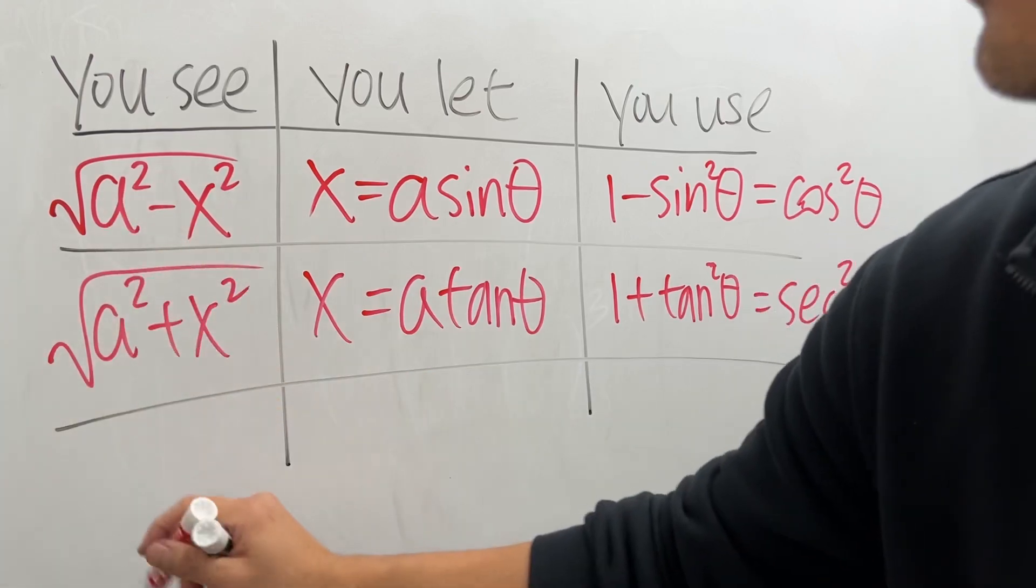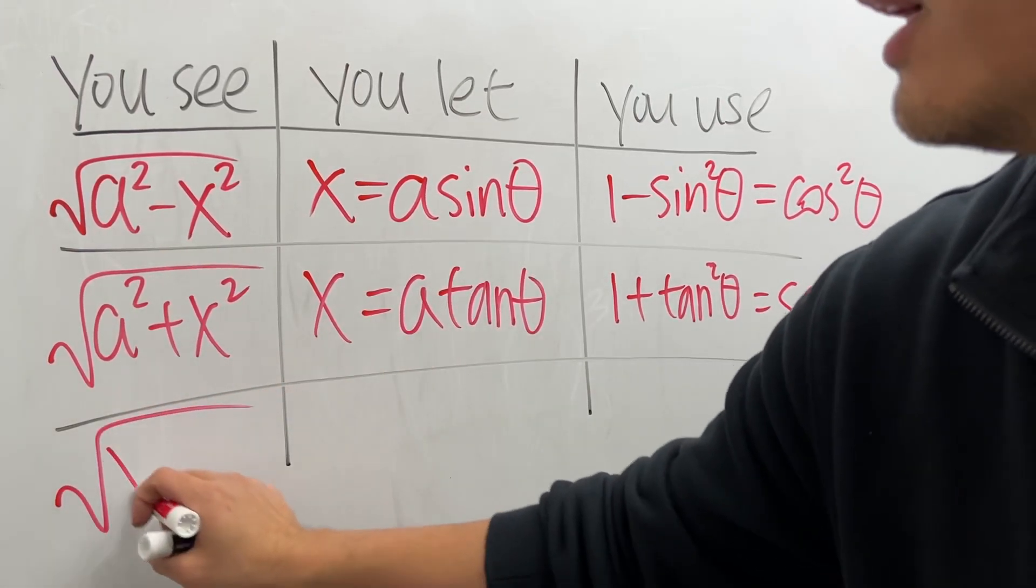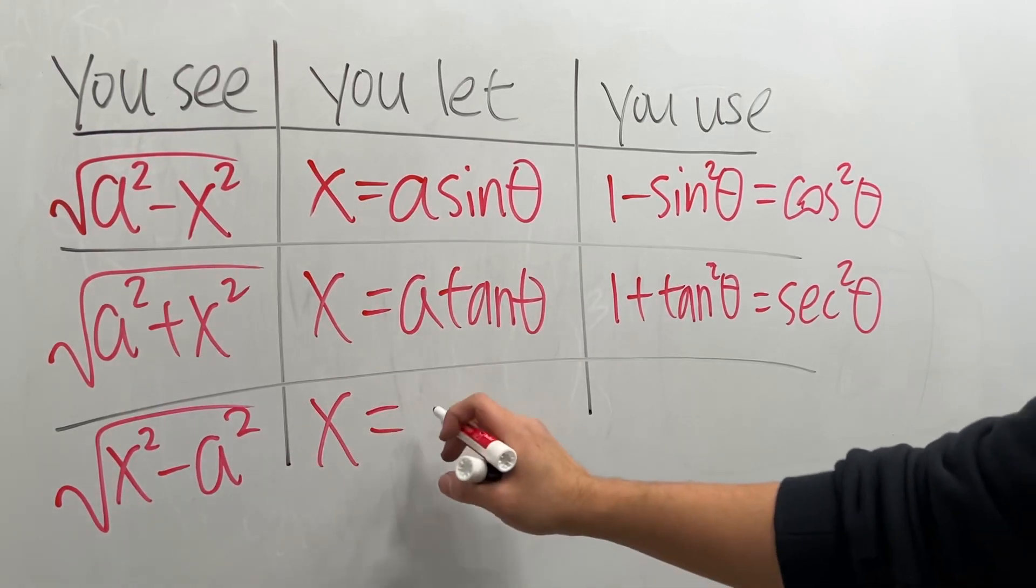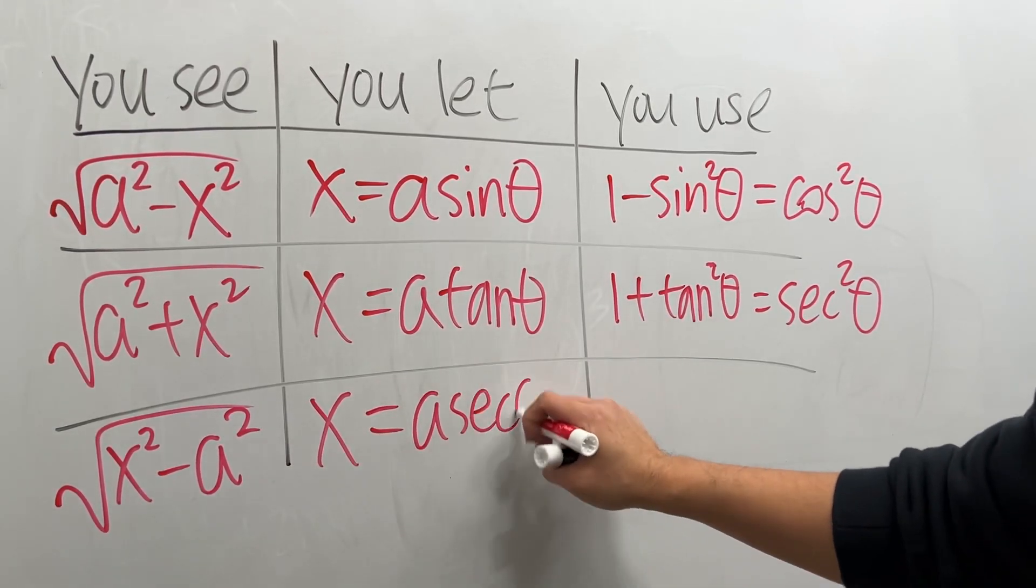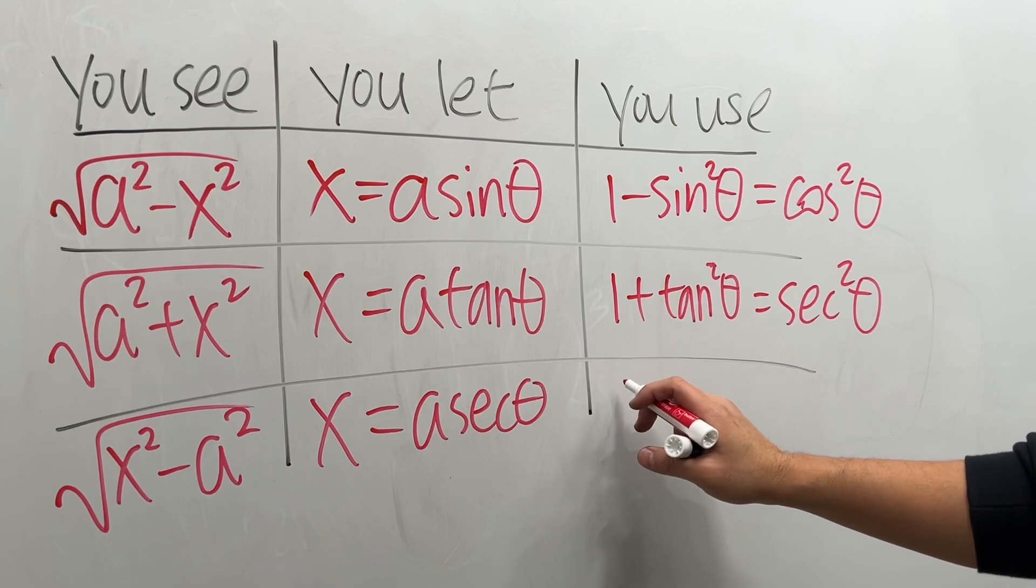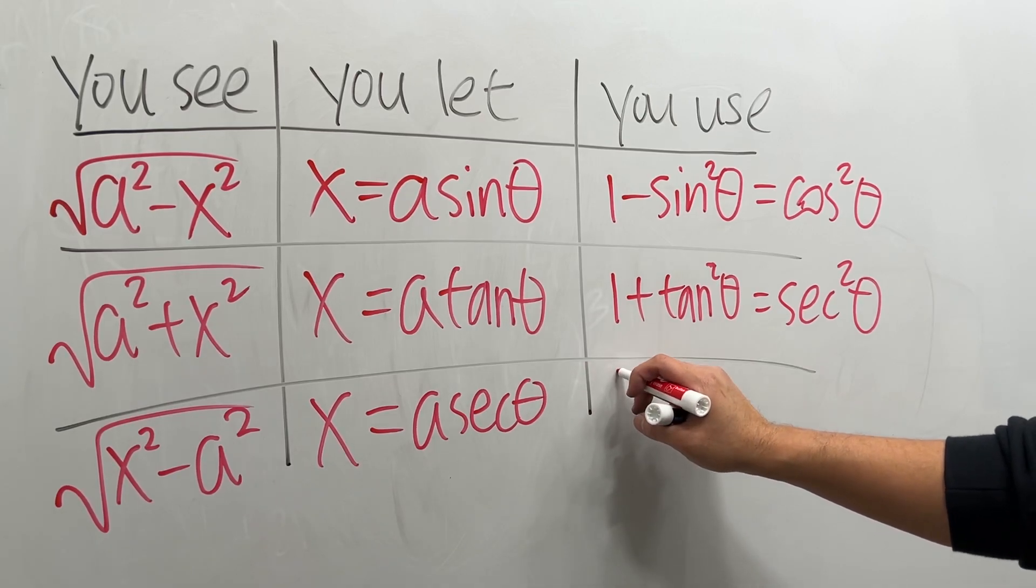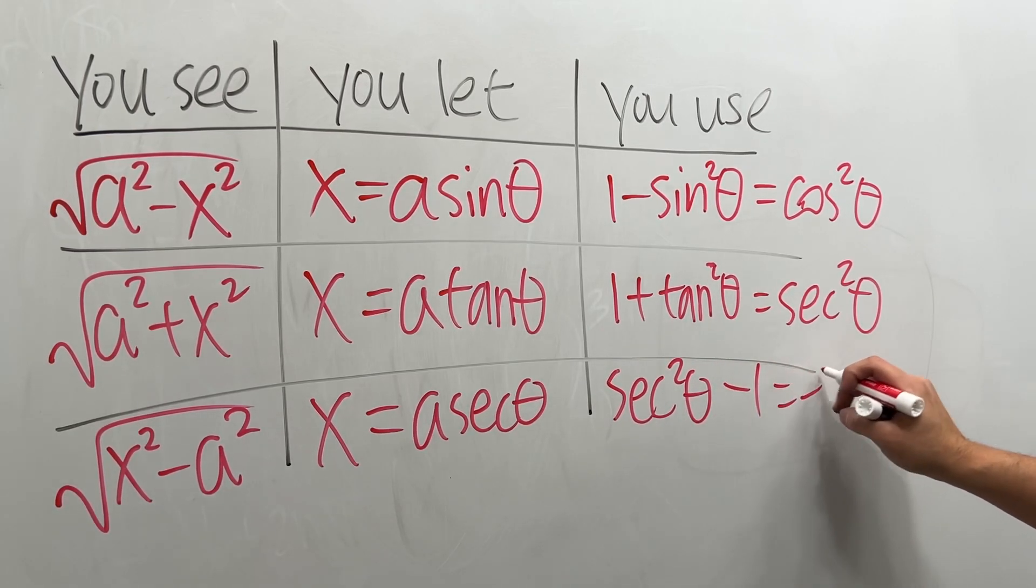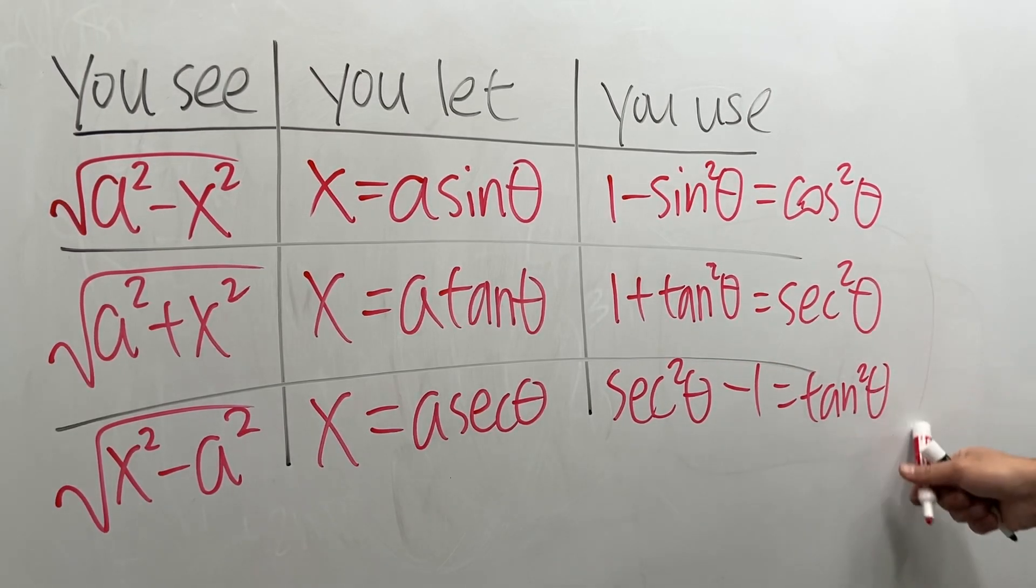Now, if you have square root of x squared minus a squared, in that case you say x is equal to a times secant theta. And that is going to be secant squared theta minus 1 is equal to tangent squared theta.